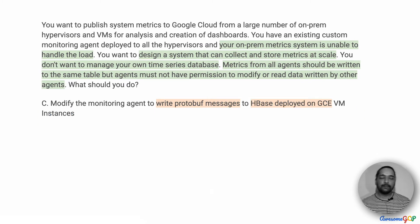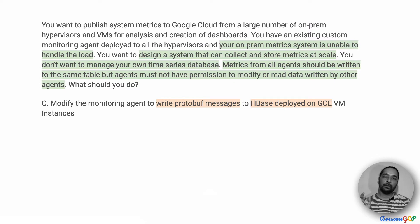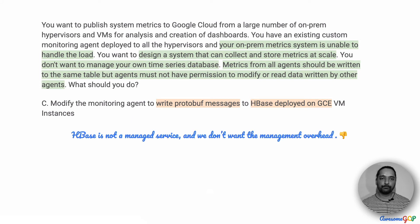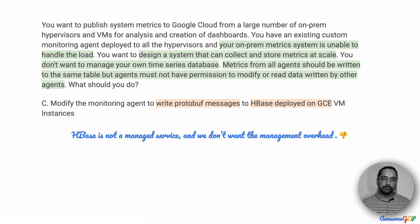Option C suggests that we modify the monitoring agent to write protobuf messages — which we've seen is good because it reduces bandwidth and makes it fast. But where is the data written? Option C wants us to write the data to HBase deployed on a Google Compute Engine instance. This has the same problem as Cassandra — neither Cassandra nor HBase is a managed service, and we don't want that additional administrative overhead. Therefore Option C is also eliminated.